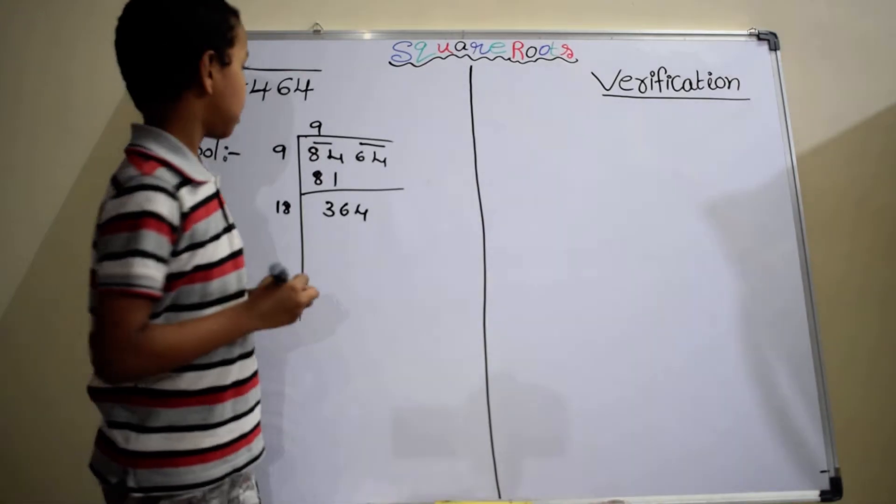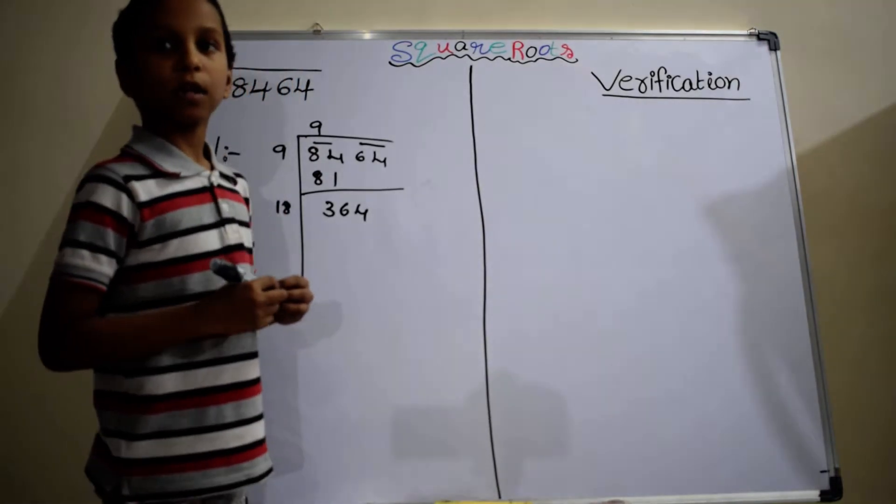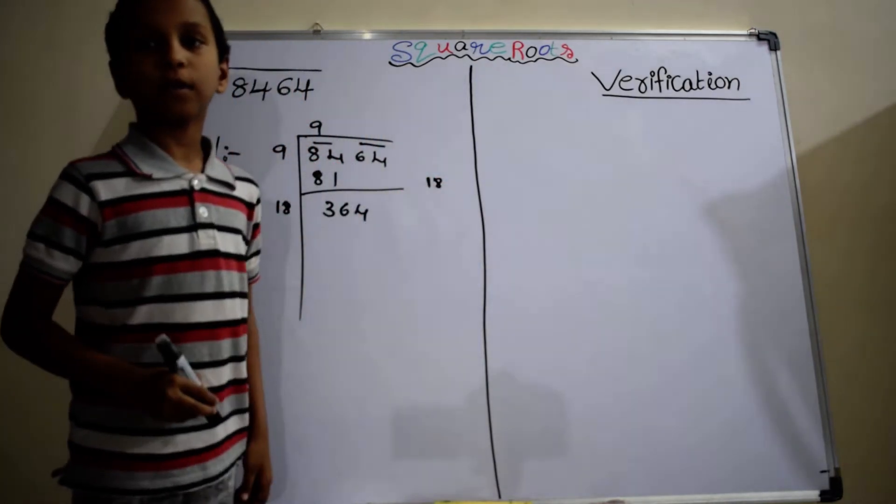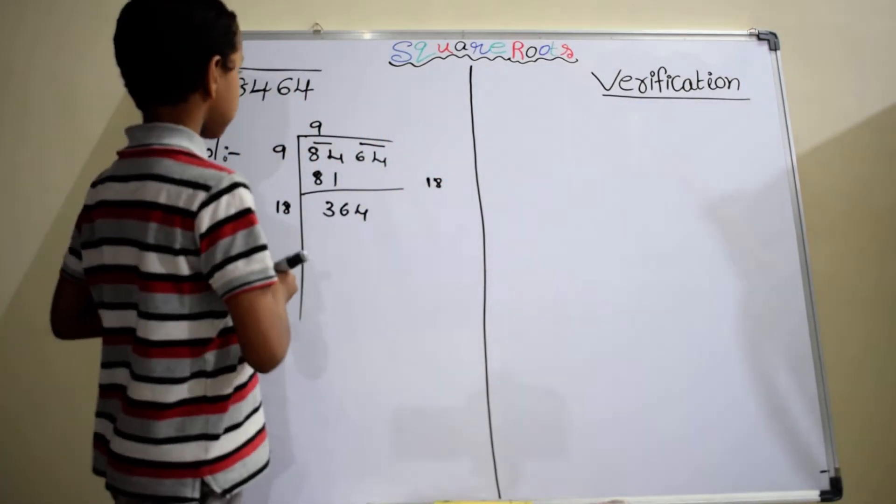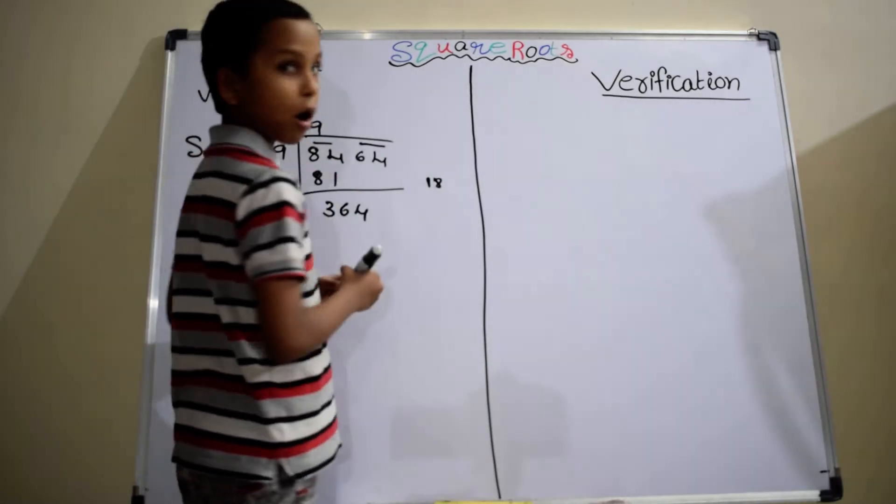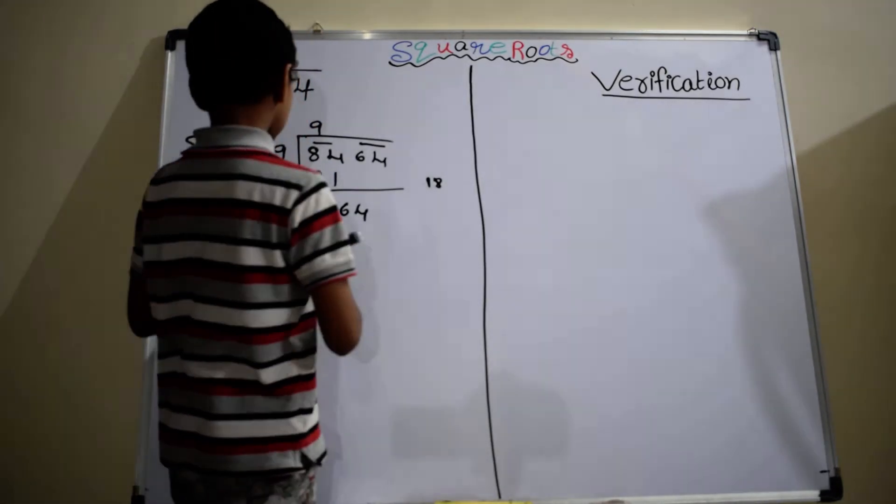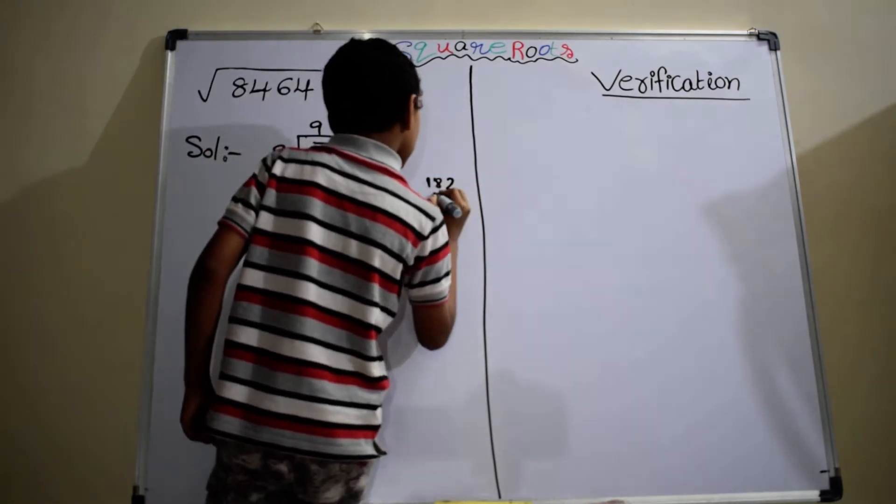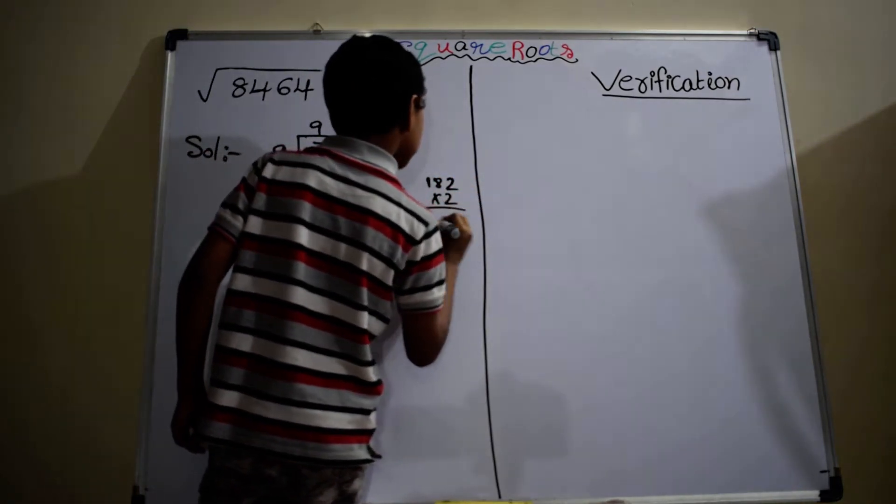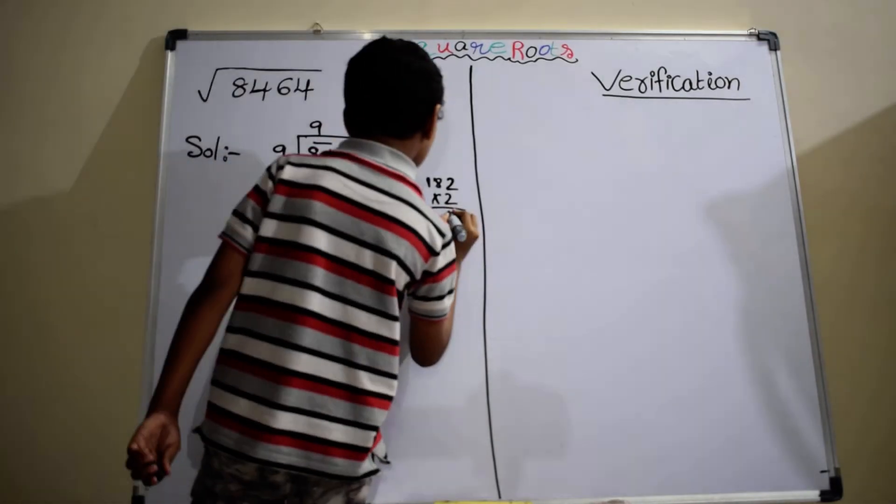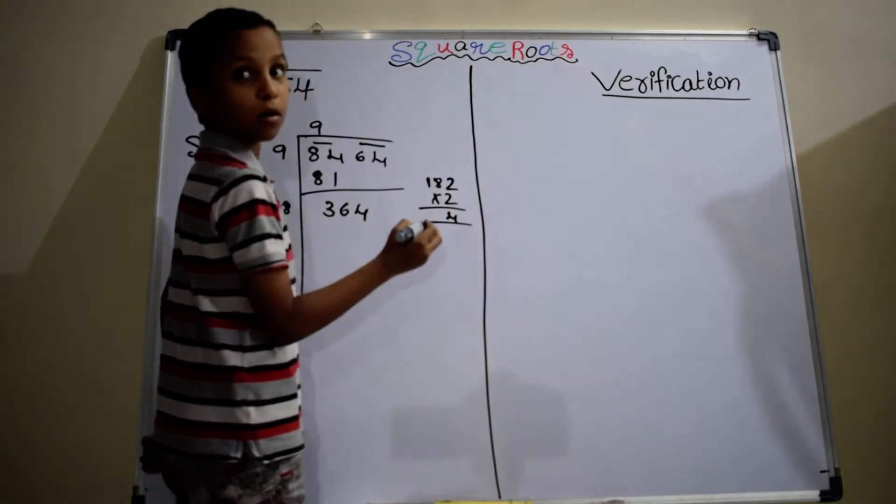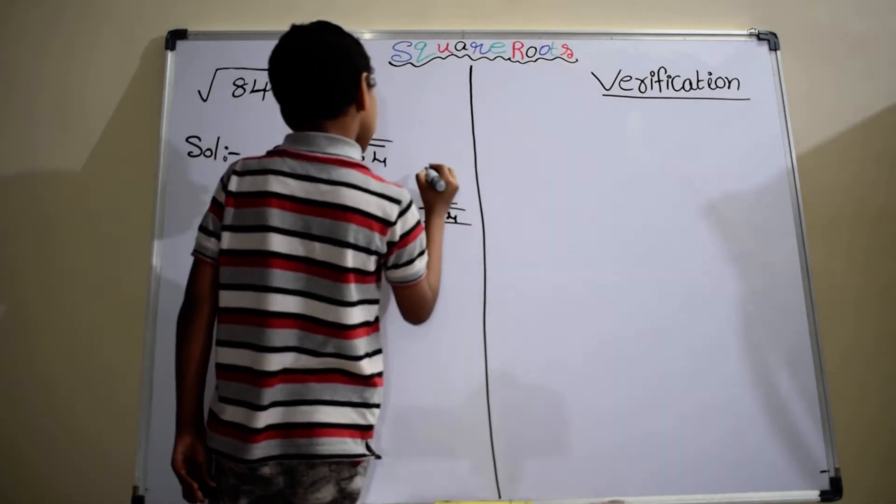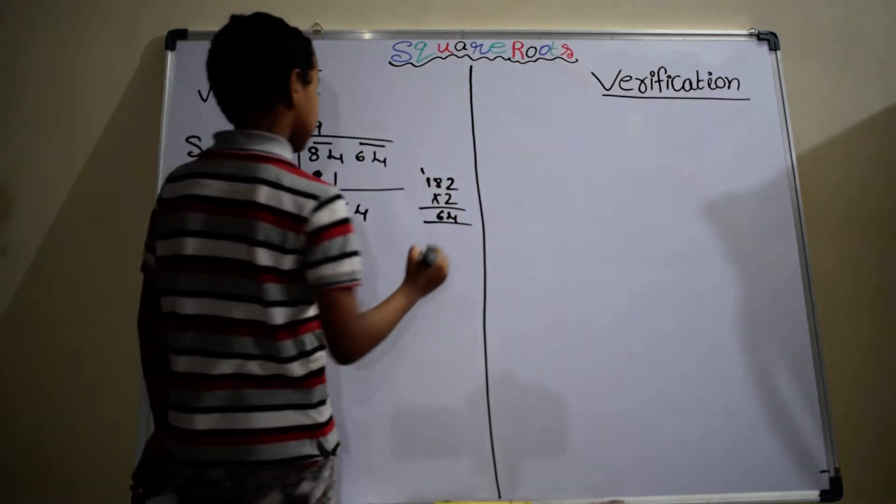Here, we have to take number besides 18. When you multiply with that number, you have to get nearby the number 364. 182 into 2 equals to 2 into 2, 4. 2 into 8, 16. 2 into 1, 2 plus 1, 3.